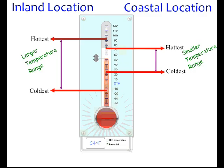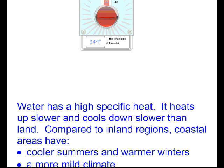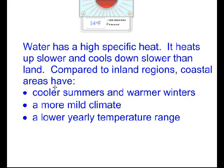Because water has a high specific heat, heats up slower and cools down slower than land, compared to inland locations, coastal areas have cooler summers, warmer winters. That means the climate is more mild - it doesn't have the large extremes - and the temperature range is going to be lower.